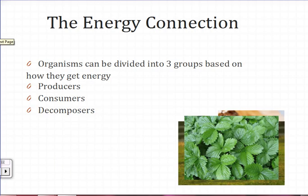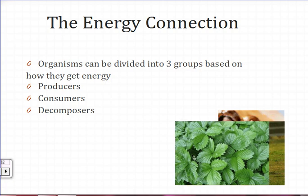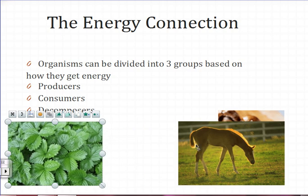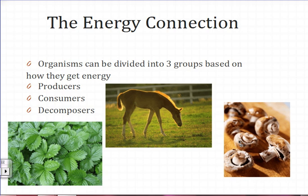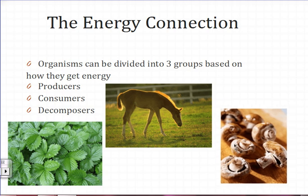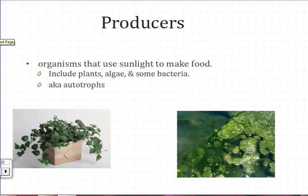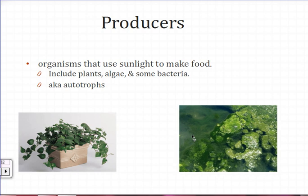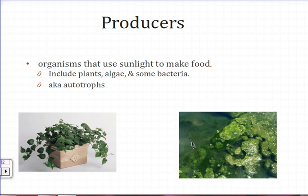The energy connection. Organisms can be divided into three groups based on how they get their energy: producers, consumers, and decomposers. Producers are organisms that use sunlight to make food. They include plants, algae, and some bacteria. They're also called autotrophs. The prefix 'auto,' like in 'automatic,' means something is done on its own. So producers being called autotrophs means they are making their own food. They do so in a process called photosynthesis.